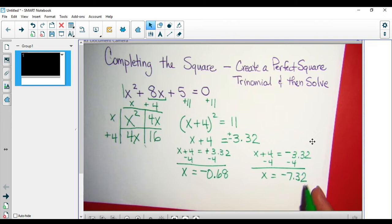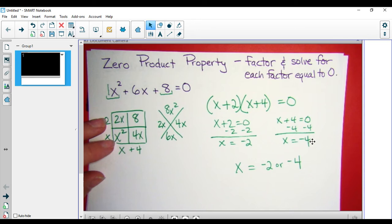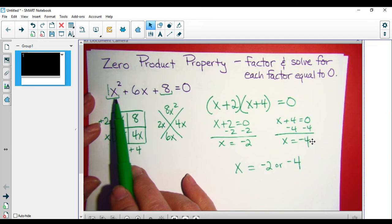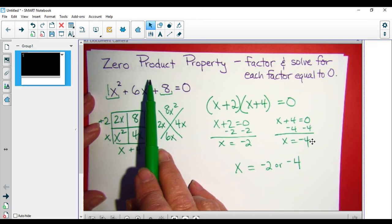Again, if I'm looking at the original problem and I think that I can come up with an easy combination of numbers, I've got numbers that are easy to work with, easy to factor, I'm going to try zero product property to solve my equation.